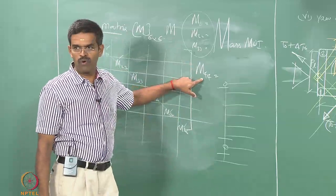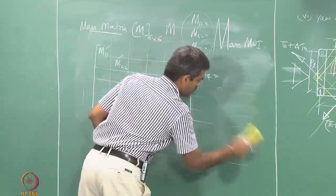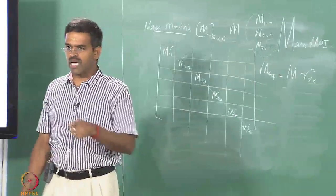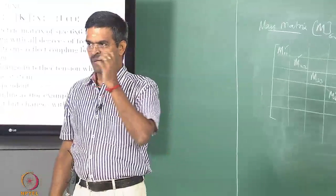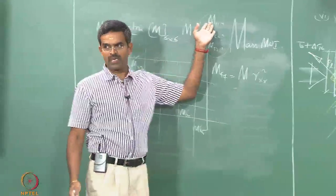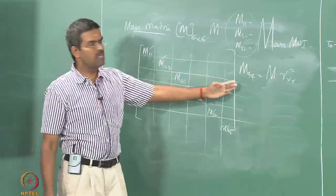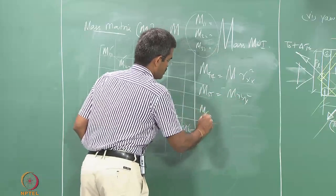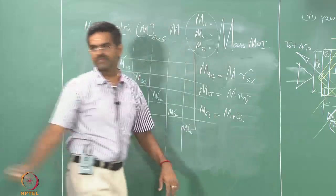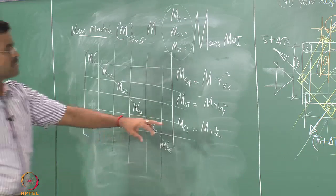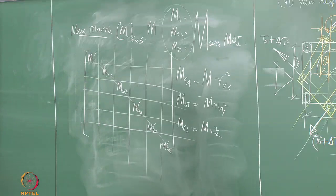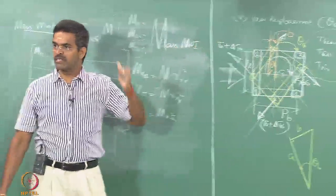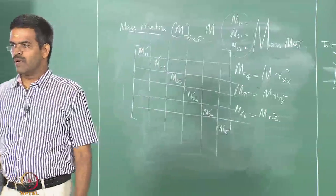I can easily find m44 = m·rxx². Similarly, m55 = m·ryy² and m66 = m·rzz². The radius of gyration can also be obtained experimentally using simple flotation statistics. So all mass matrix values are readily available. Now, we will also have added mass because the body is partially submerged and waves have crests and troughs that add and remove added mass respectively — this must be accounted for.